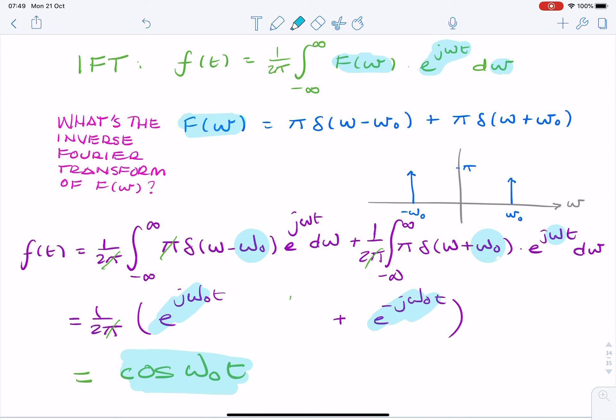So, what we've just shown is that, in the time domain, cosine omega nought t corresponds to a pair of impulses in the frequency domain. Another way of saying that is the inverse Fourier transform of a pair of impulses, which is symmetric about the y-axis, so a pair of impulses at omega nought and minus omega nought, corresponds in the time domain to cosine omega nought t. And that is our final answer.